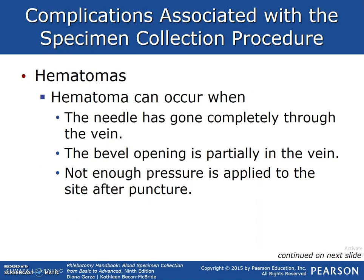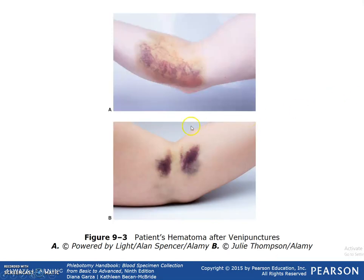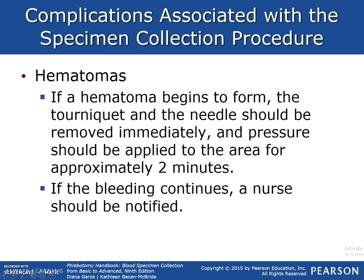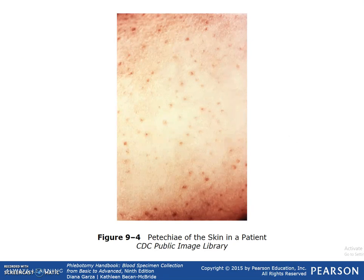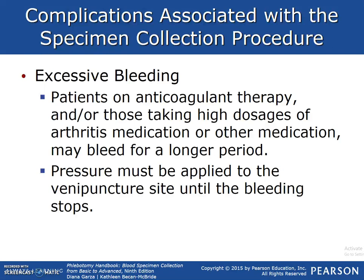Hematomas: a hematoma can occur when the needle has gone completely through the vein, the bevel opening is partially in the vein, or not enough pressure is applied to the site after puncture. If a hematoma begins to form, the tourniquet and needle should be removed immediately, and pressure should be applied to the area for approximately 2 minutes — you will see a bubble form above the needle. If bleeding continues, a nurse should be notified. Petechiae are small red hemorrhagic spots appearing on the patient's skin, indicating that minute amounts of blood have escaped into the skin's epithelium. Excessive bleeding: patients on anticoagulant therapy or those taking high dosages of arthritis medication may bleed for longer periods. Pressure must be applied to the venipuncture site until bleeding is stopped.